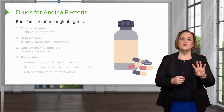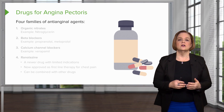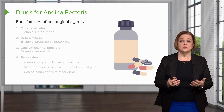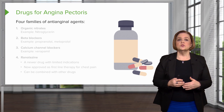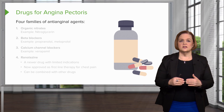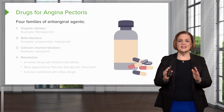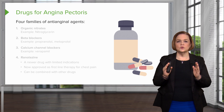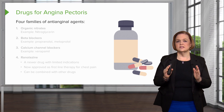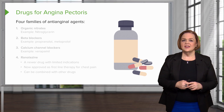Now there are four families of anti-anginal agents — these are drugs that we use to treat chest pain. As we start looking at the drugs, just tell yourself there are only four families or groups of drugs that we're going to talk about in this video.